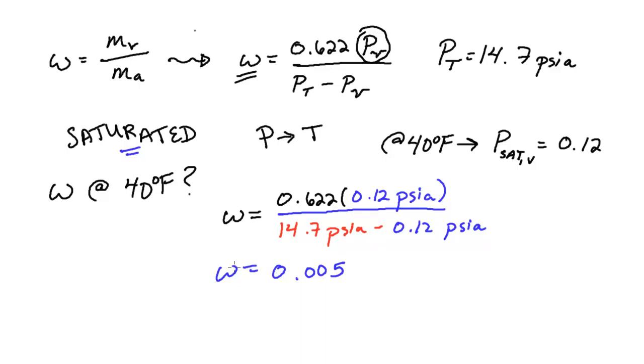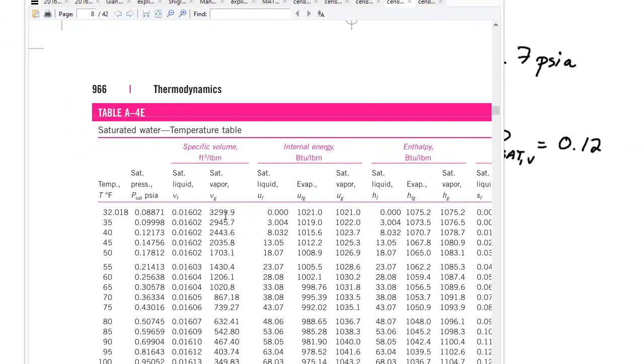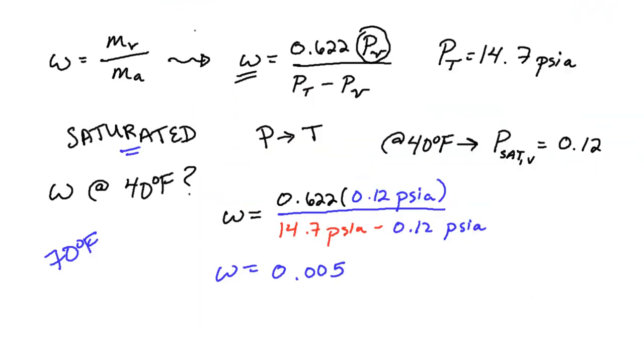And so that's an interesting result. Now, just for the sake of an example, we can go ahead and let's look at, say, when we're at 70 degrees Fahrenheit. What does that look like? Well, let's bring over the table again, and at 70, we are at 0.36 psia for saturation pressure.